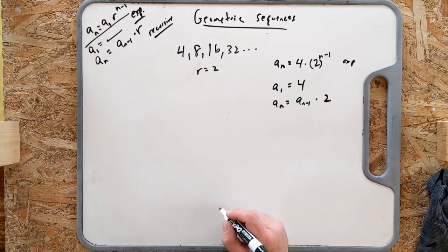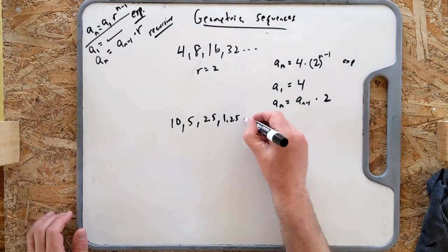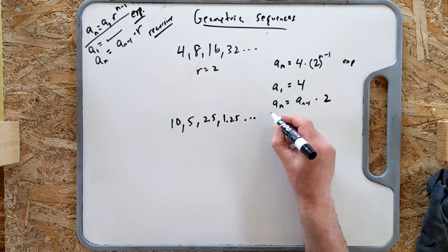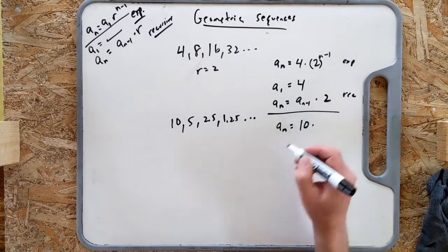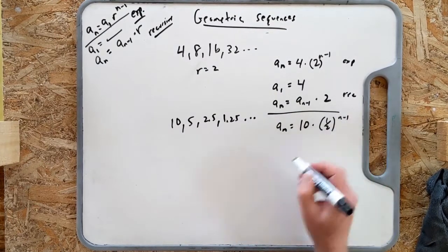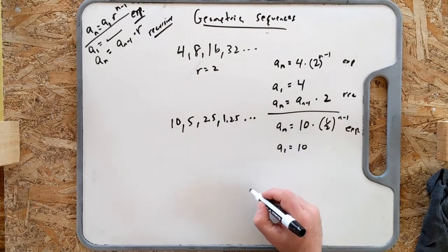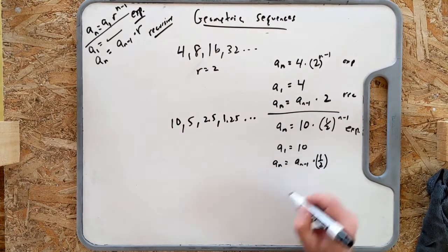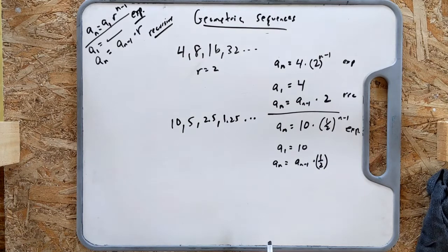Practice: give me the recursive formula for 10, 5, 2.5, 1.25. Pause the video and try it. The explicit formula is a_n equals 10 times (one-half) to the n minus 1. The recursive formula is: a_1 equals 10, and every next term is the previous one times one-half. So 10 times a half is 5, 5 times a half is 2.5, times a half is 1.25, etc.